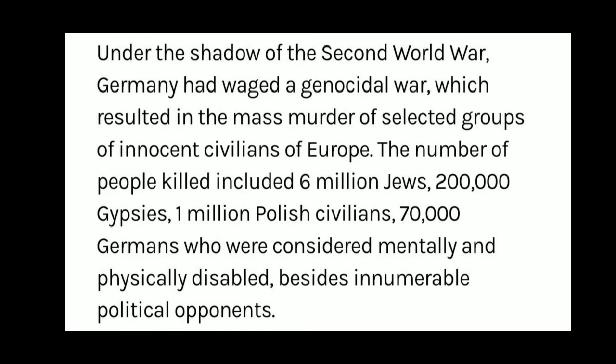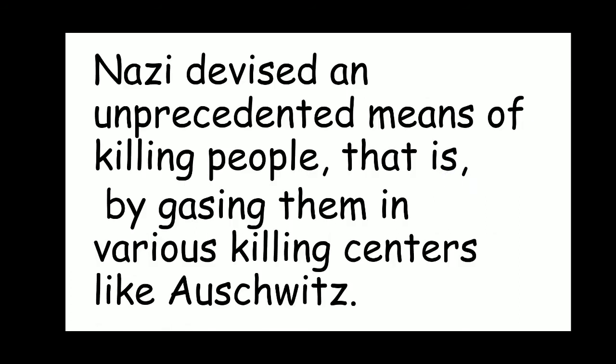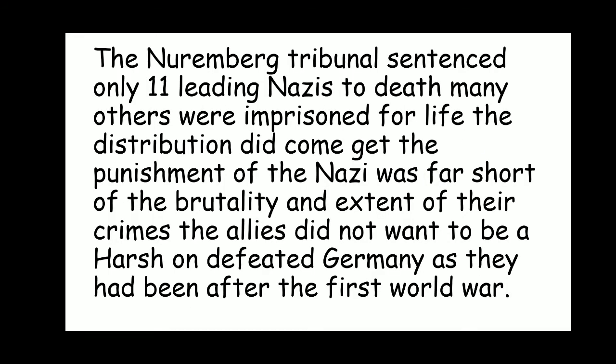Germany's conduct during the war, especially actions which came to be called crimes against humanity, raised serious moral and ethical questions and invited worldwide condemnation. Under the shadow of the Second World War, Germany had waged a genocidal war, resulting in the mass murder of selected groups of innocent civilians of Europe. The number of people killed included 6 million Jews, 2 lakh gypsies, 1 million Polish civilians, 70,000 Germans considered mentally and physically disabled, besides innumerable political opponents. The Nazis devised unprecedented means of killing people by gassing them in various killing centers like Auschwitz. The Nuremberg Tribunal sentenced only 11 leading Nazis to death, and many others were imprisoned for life.